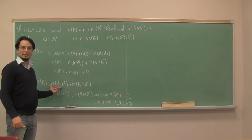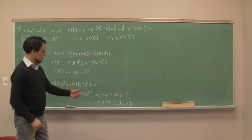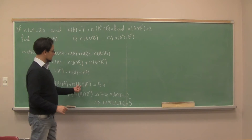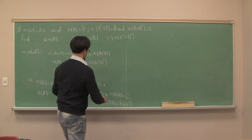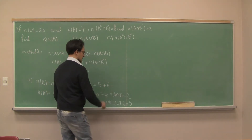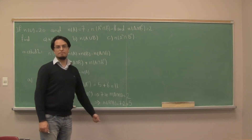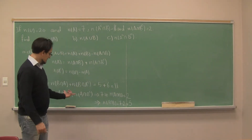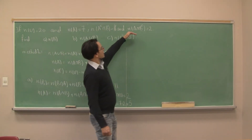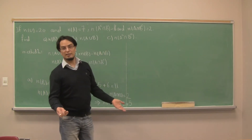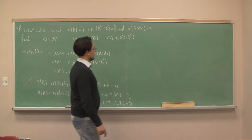Now plugging back in: N of B equals 5 plus 6, which equals 11. The intersection has 5 elements and we used it to find N of B equals 11.